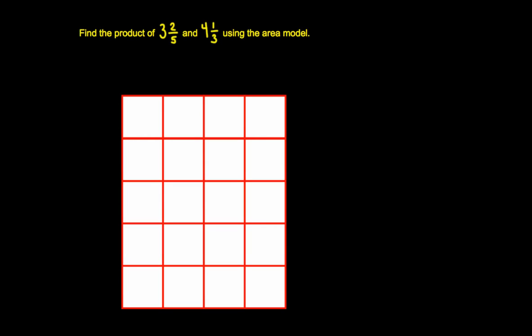Hi, mathematicians. Today we are going to learn about how to multiply mixed numbers using an area model. This is a very visual model so that you can see exactly where we're getting our math from and why the mathematics works the way it does, so that we can multiply in a way that makes sense throughout all of math.